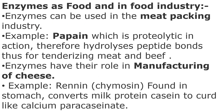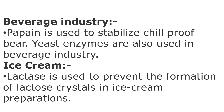Enzymes can also be used in the food industry. In the meat packing industry, papain, which is proteolytic in nature, hydrolyzes peptide bonds and thus aids in tenderizing meat and beef. Enzymes have a role in manufacturing of cheese — rennin is an enzyme found in the stomach that converts milk protein casein to curd, like calcium paracaseinate. In the beverages industry, papain is used to stabilize chill-proof beer, and yeast enzymes are also used. For ice cream, lactase enzyme is used to prevent the formation of lactose crystals.